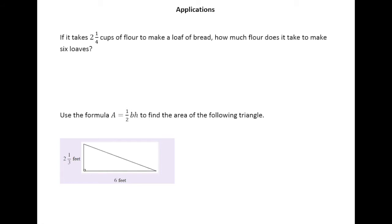So, we understand how much it takes to make one, but we want to make six, and so that means we've got to multiply how much flour it took to make one loaf by six. So, we'll just simply have two and one quarter times six.